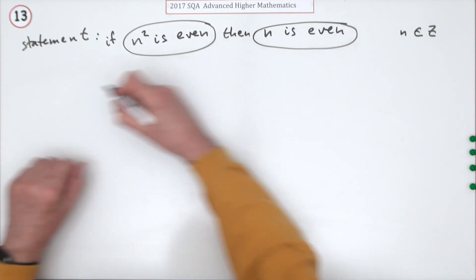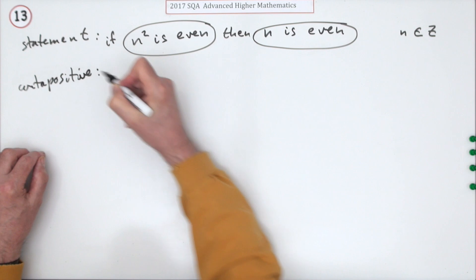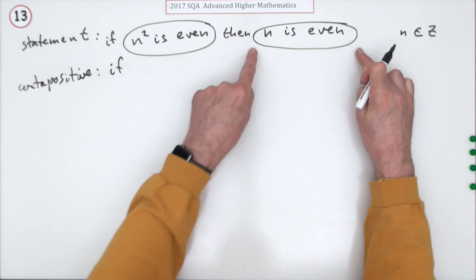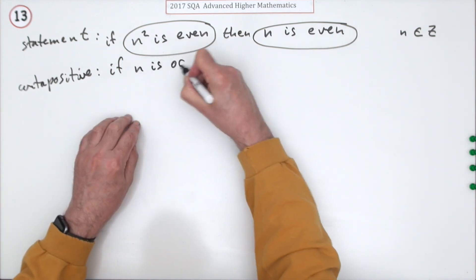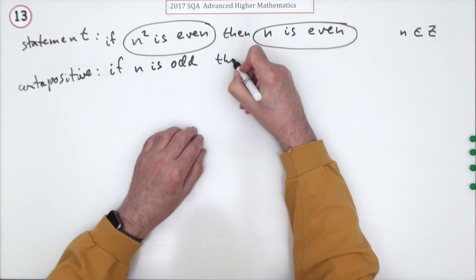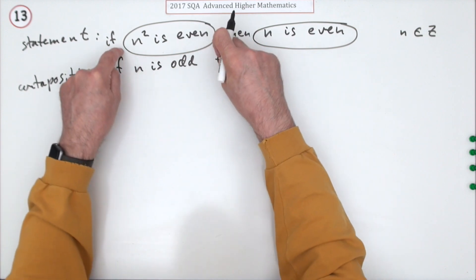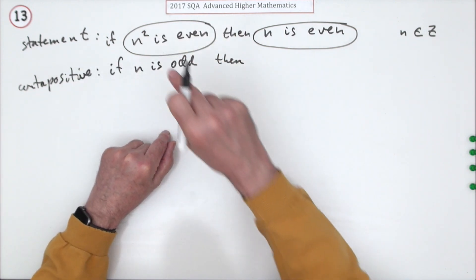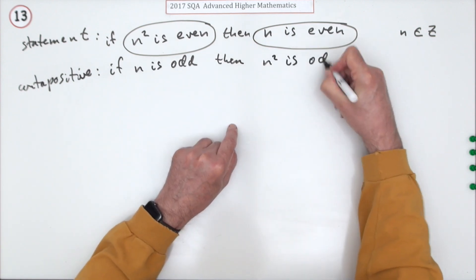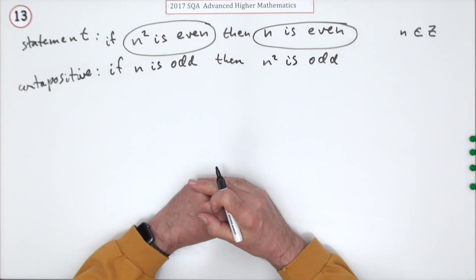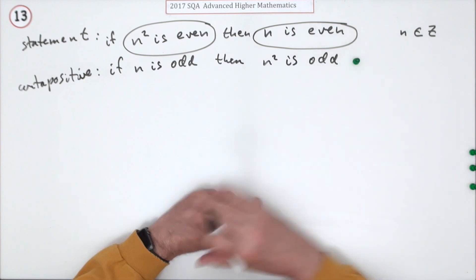So starting with this side, I would say contrapositive: if, negation of this, n is even, no it's not, n is odd. Then negation of this, n squared is even, no it's not, n squared is odd. That's the contrapositive statement and writing that down gets you the first mark.